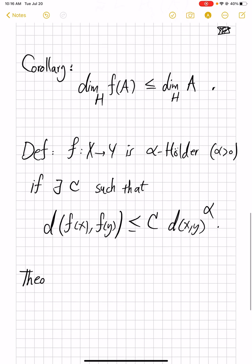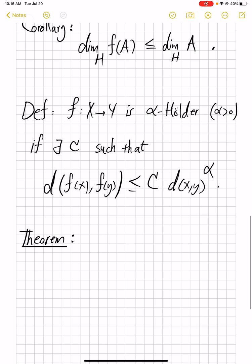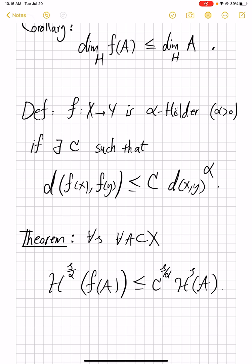So what can we claim about the behavior of Hölder maps with respect to Hausdorff measure? The answer is that H^(S/alpha) dimensional Hausdorff measure of the image will be bounded by C to power S over alpha times H^S measure of the set you start with. The assumptions here are, well, there's no restriction. So it's for every S, for every subset of the metric space X, we have this.